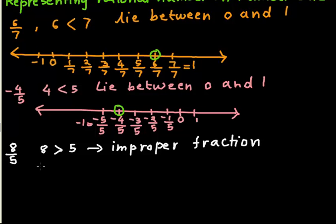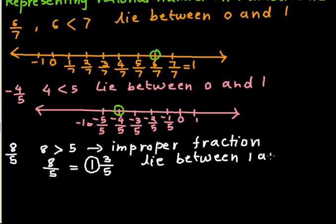First you convert this improper fraction to mixed fraction. So it will be 1 integer 3 over 5. Since here you have 1, so this number lies between 1 and 2.